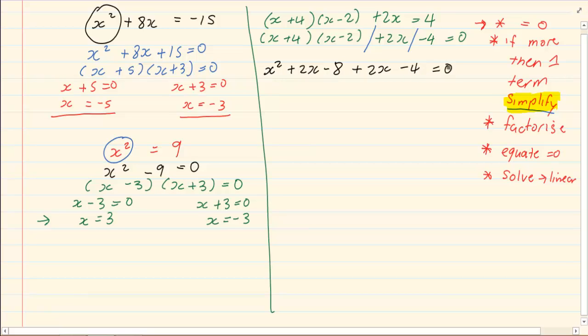Now once we simplify, before we factorize, we must put the equation into descending powers of x. It's called neatening off. So we got x squared plus 4x minus 12 is equal to 0.